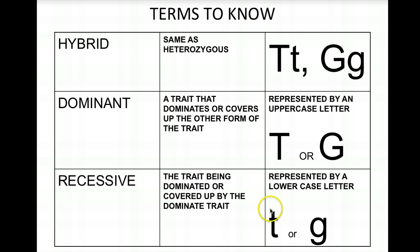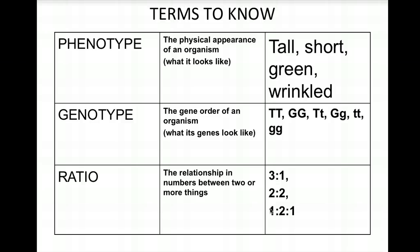Phenotype is the physical appearance of an organism — what it actually looks like. Is it tall or short? Is the plant green or red? Does it have wrinkled or smooth seeds? Is your hair brown? Do you have blue eyes? Is your hair curly, straight, or wavy? Tall, short, dark skin, light skin, freckles or no freckles — those are all phenotypes. Phenotype is anything you can observe about how something looks.